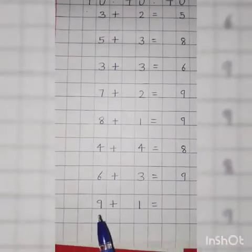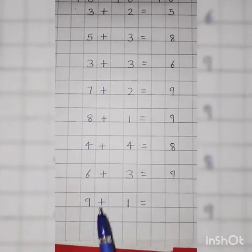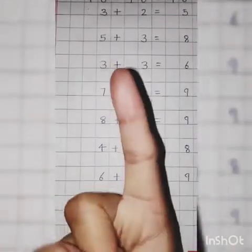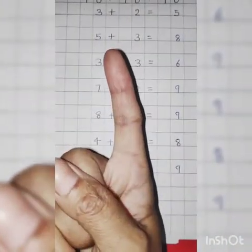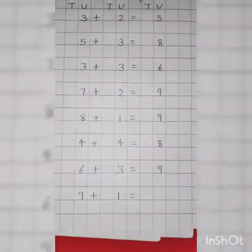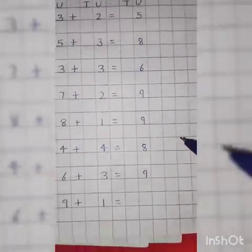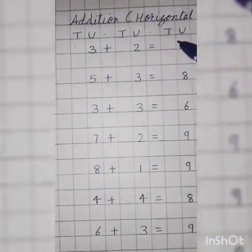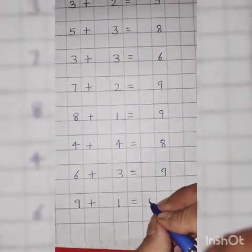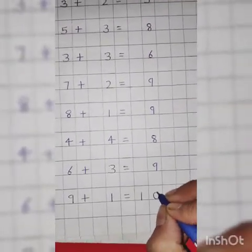Now 9 plus 1. 9 goes on head and 1 on fingers. Hit the 9. What comes after 9? 10. So, answer is 10. Now, we have 2 digits, 1 and 0. So, write down 1 under T and 0 under unit.